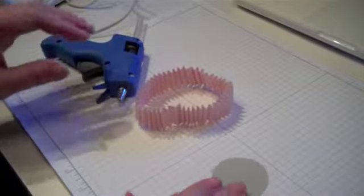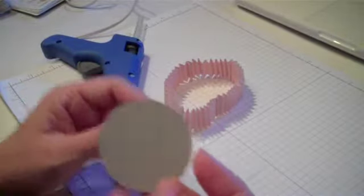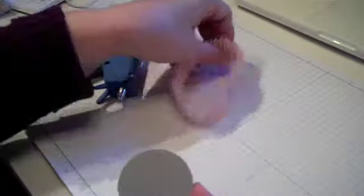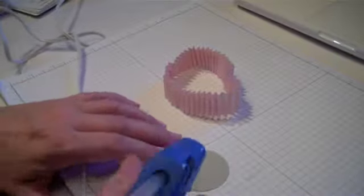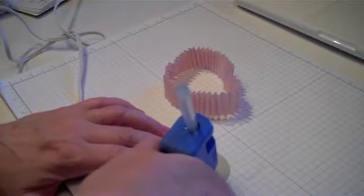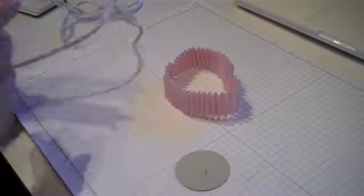And you're going to wrap that around so that it forms a circle. And adhere the other two sides, or the other side. And you'll have a nice circle there. It sort of looks like a cupcake wrapper without the bottom.